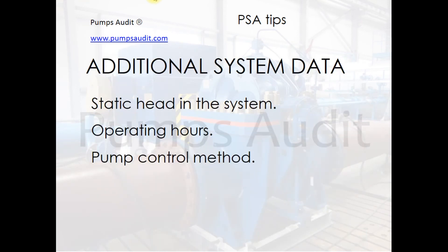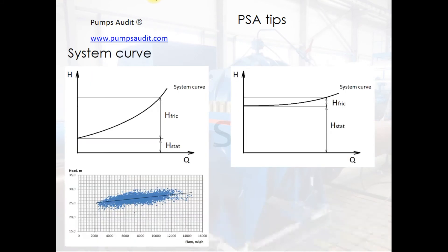Additional system data includes: the system curve, static head in the system curve, operating hours, and pump control methods. Because the pump operating point is the intersection of the pump curve and the system curve, during pump system assessment we have to determine the real pump curve and the real system curve. Determining the proportion of the static component in the system curve is very important for selection of the pump control method.